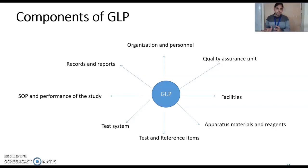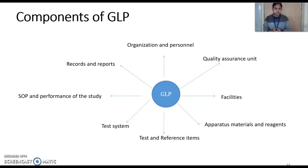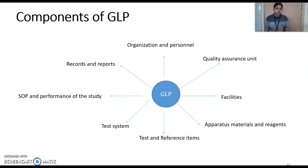Whatever the instruments, apparatus, materials, and reagents — you should have sufficient instruments to run those experiments. The apparatus should be calibrated, your equipment should be validated, and your materials and reagents should be properly labelled with dates of receipt and expiry. All these things must be properly documented.